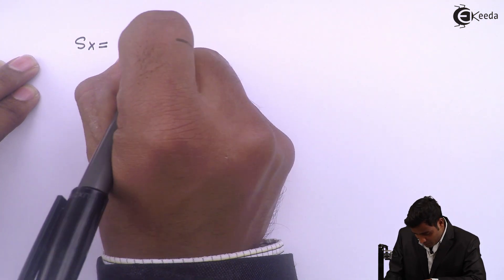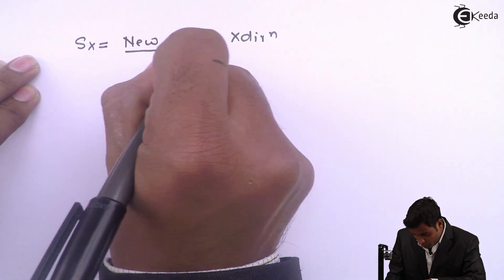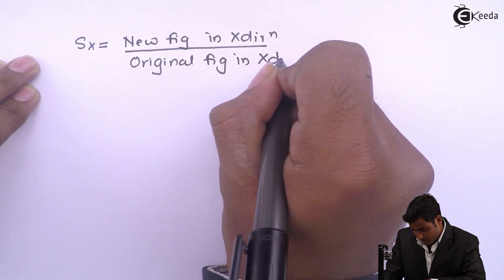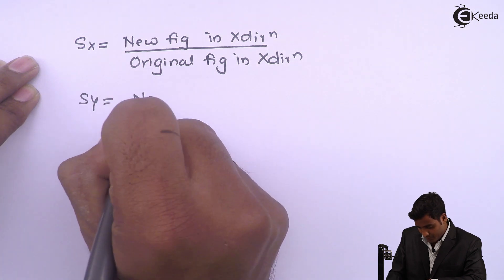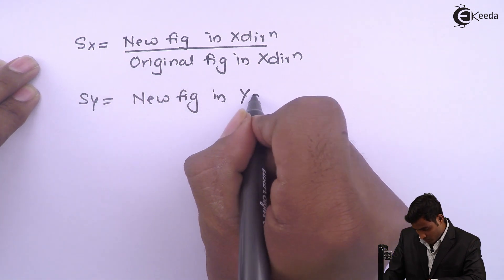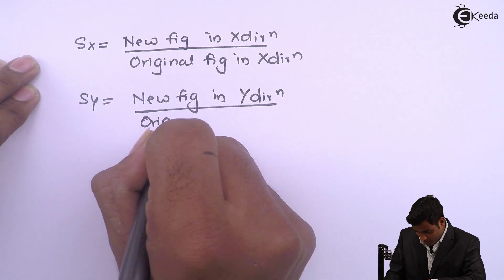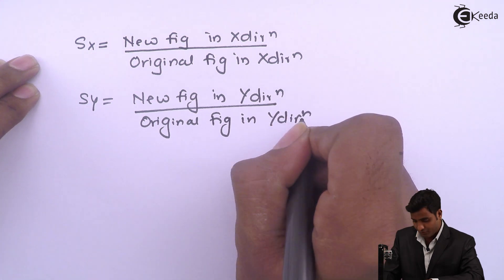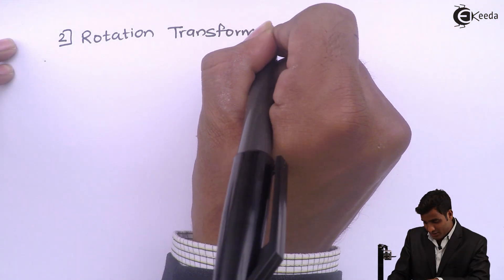Similarly for Sy new figure in y direction upon original figure in y direction. So this is a formula for calculating scaling both x as well as y direction.